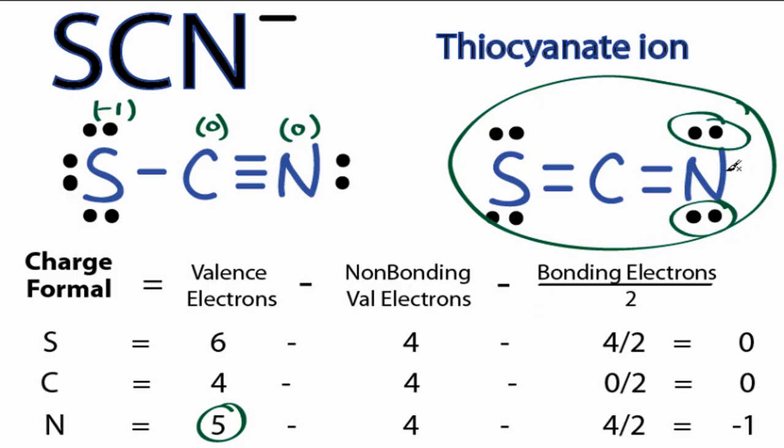These right here and here are non-bonding, so 2 plus 2 is 4 non-bonding. And then we have 2 plus 2 again, 4 bonding electrons, which we divide by 2. It has a negative 1 charge.